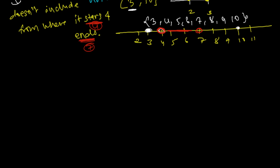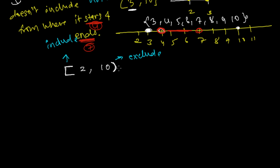Sometimes you'll get a mixed notation — one side inclusive, the other side exclusive. For example: closed bracket two, ten open bracket. The closed side means include, and the open side means exclude. So we include two but do not include ten. The result is two, three, four, five, six, seven, eight, and nine — but not ten, because ten has the open interval exclusive notation.